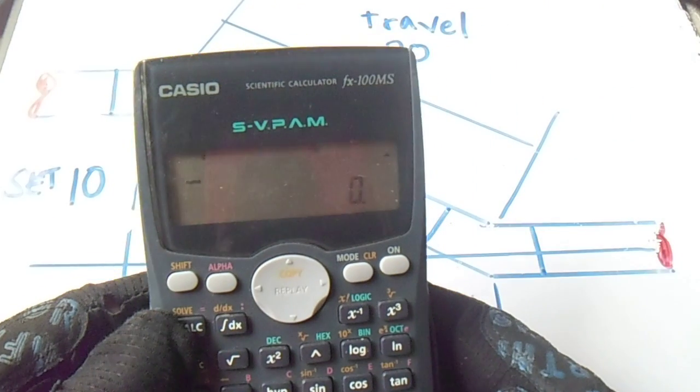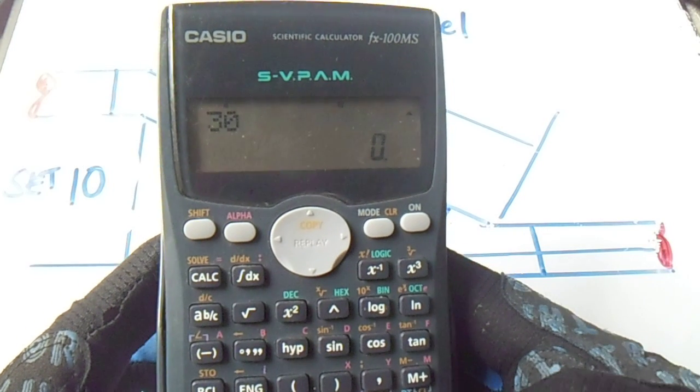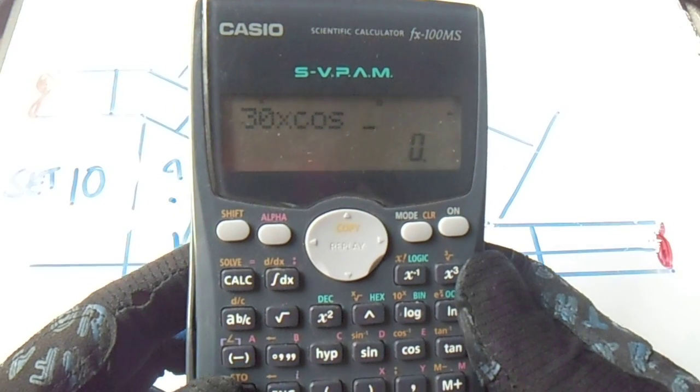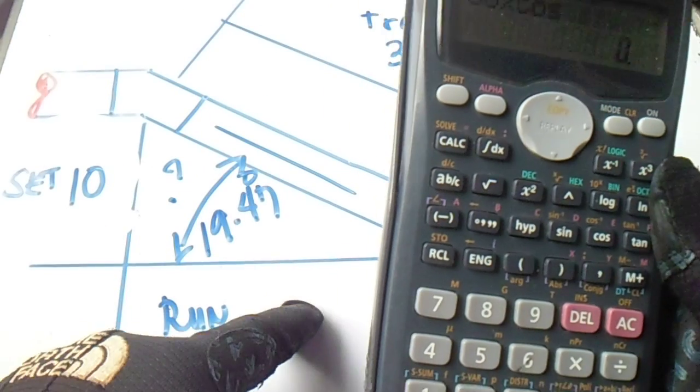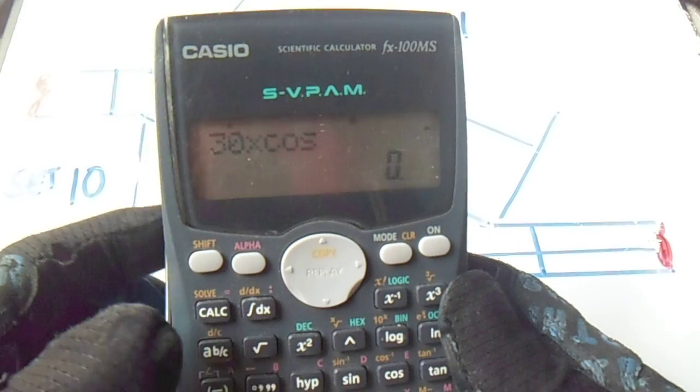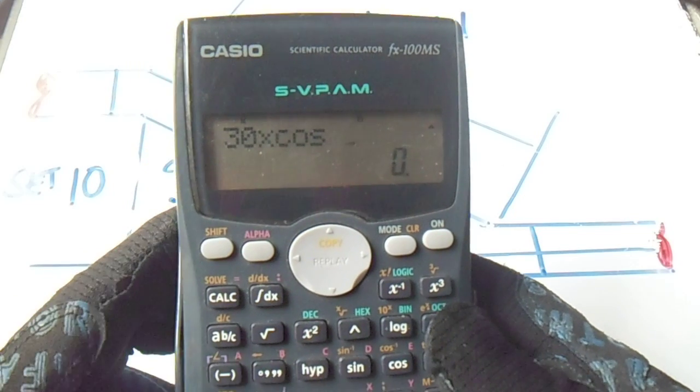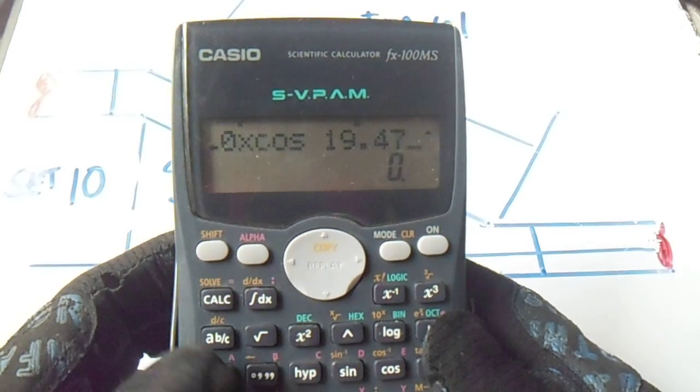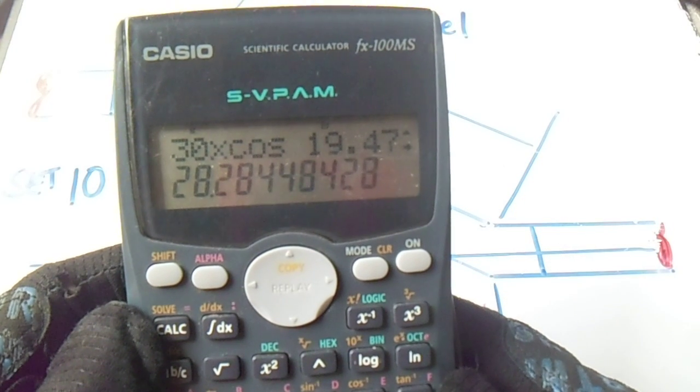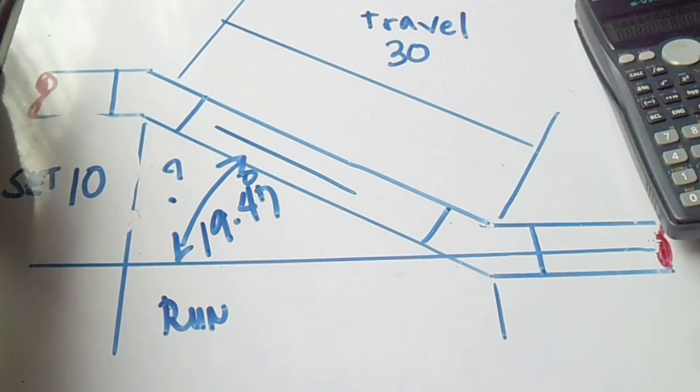Now we will compute this one. So 30 multiply it by cosine. To compute this one, to find this one, just use the cosine. Cosine of 19.47. So this is our answer for the run, so the answer for the run is 28.26.